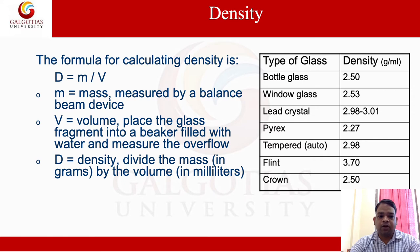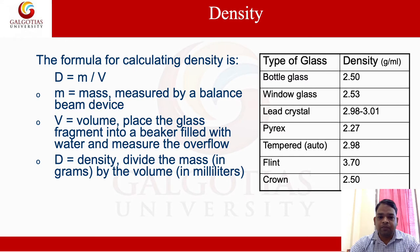Here M equals mass measured by a balanced beam device. V equals volume. Place the glass fragment into the beaker, fill with water and measure the overflow. D equals density: divide the mass in grams by the volume in milliliters. There is a table which shows the several types of glass and their corresponding density values.